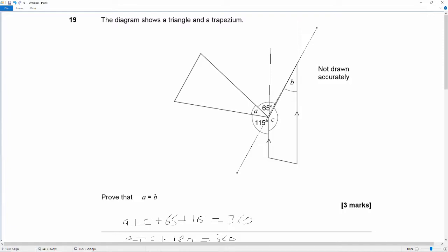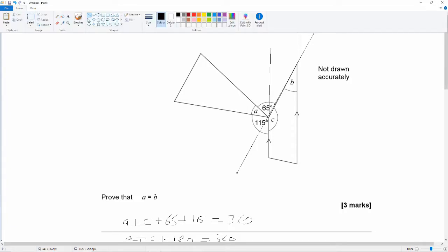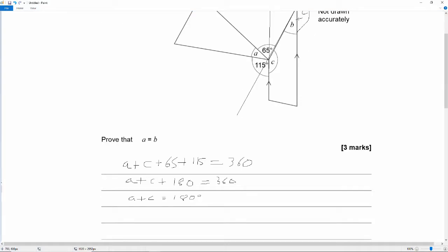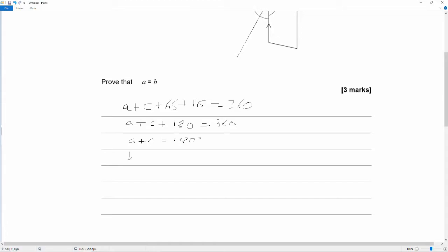So this line goes through these two parallel lines, so this angle here must be the same as angle C, because these two lines are parallel. So B plus C, because they fall on this straight line, must equal 180 degrees. So B plus C is equal to 180 degrees.